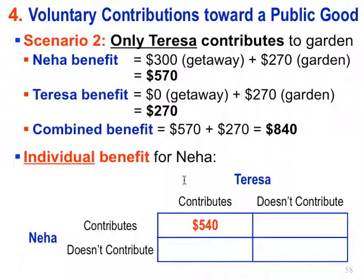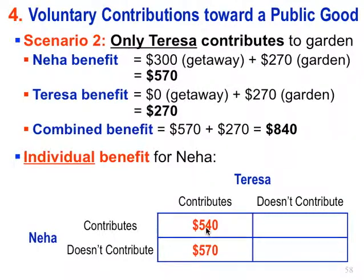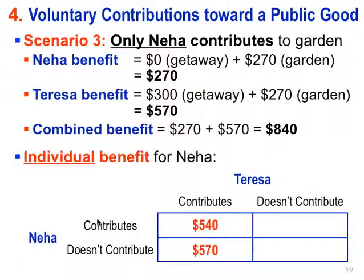Scenario two: if only Teresa contributes, that's the lower left. Before we put the combined benefit of $840, but now we focus on the individual benefit for Neha. If she does not contribute, she gets the getaway plus Teresa's garden contribution, for a total benefit of $570. Scenario three — which students had to provide — is where only Neha contributes. Neha's individual benefit is $270: she doesn't get the getaway, only gets back 90% of her $300 contribution to the public good.